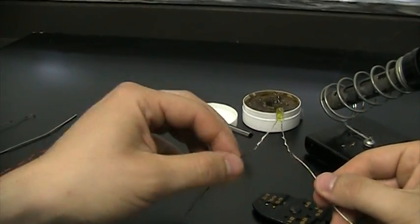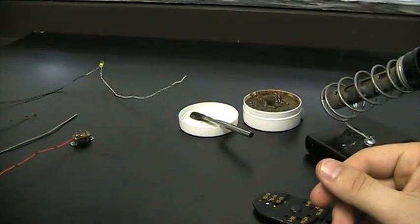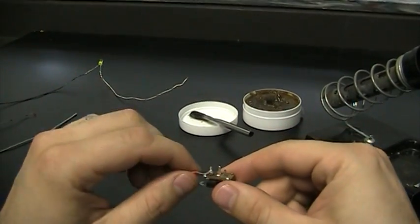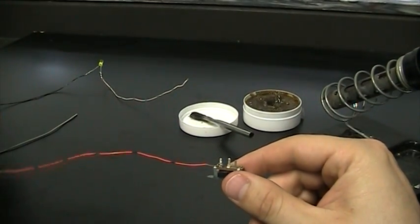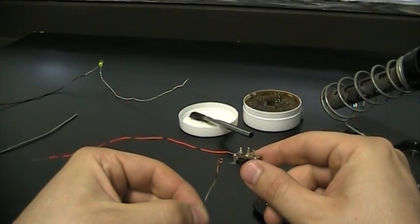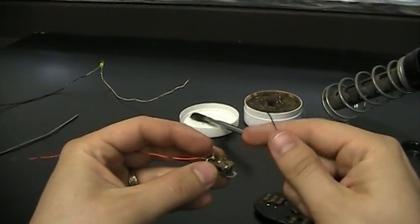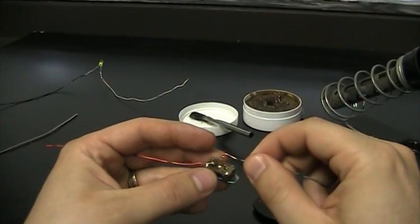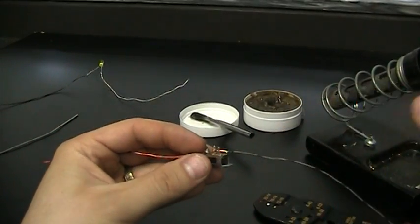Not all components come with nice long leads of metal. For example, some switches have small prongs to work with. One of the tricks I've learned is to make a small lasso out of your piece of metal, usually with a pair of pliers, and slip it over top of that piece.